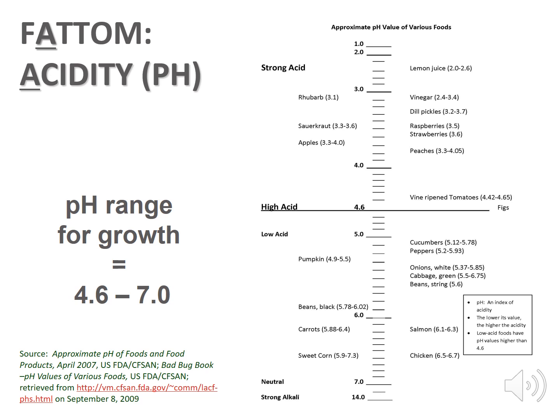Looking at the chart, we see that vinegar has a pH of 3.0 and green beans have a pH of 5.6. If we pickle the green beans and add a vinegar solution, we will bring the pH below 4.6 and can safely process them using the boiling water bath method.